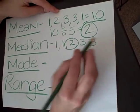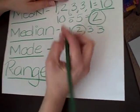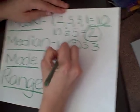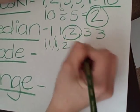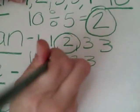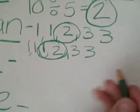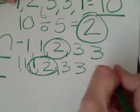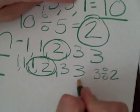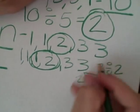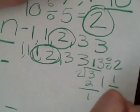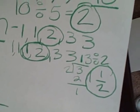Now, the trick is, suppose you don't exactly have a middle number. Let's just add one more one: one, one, one, two, three, three. What you would do to find the median is get the two numbers in the middle and add them together — that's three — and then divide them by two. So your median would be one and one half.